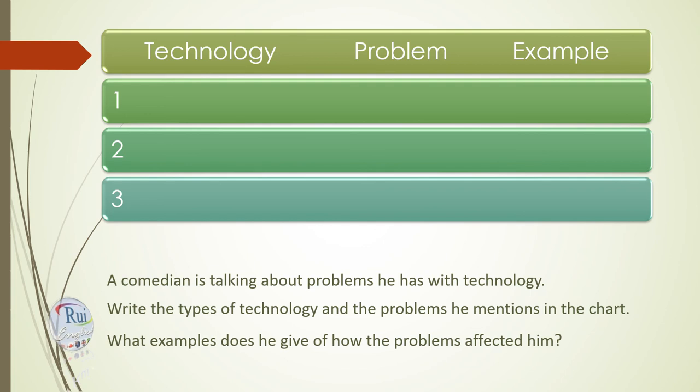The convenience of technology? Listen to a comedian talk about problems he had with technology. Write the types of technology and the problems he mentions in the chart. Listen again. What examples does he give of how the problems affected him? Complete the chart.